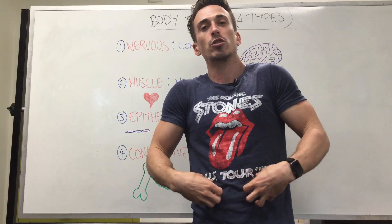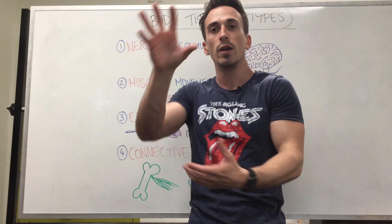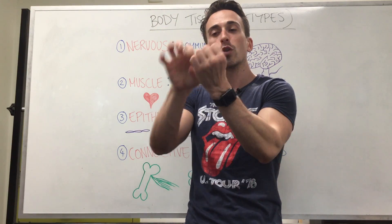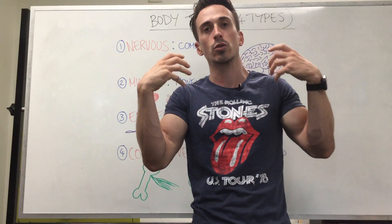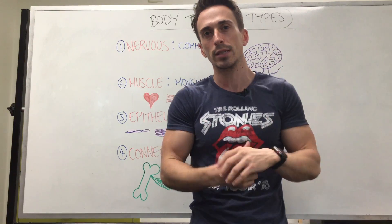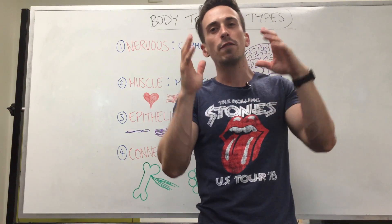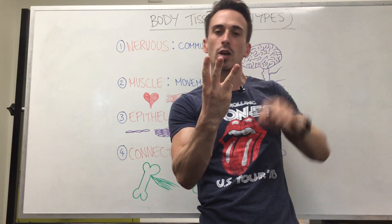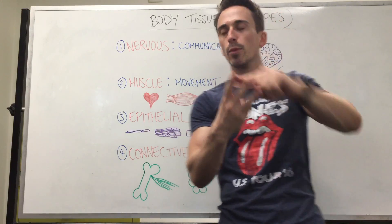Smooth muscle allows for contraction and relaxation to move products through. In the gastrointestinal tract, this allows us to move foodstuffs or fecal material through in a process called peristalsis. So muscle tissue equals movement — three types: cardiac, skeletal, and smooth.